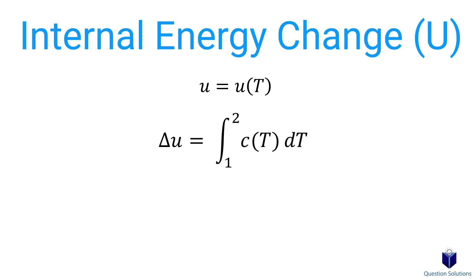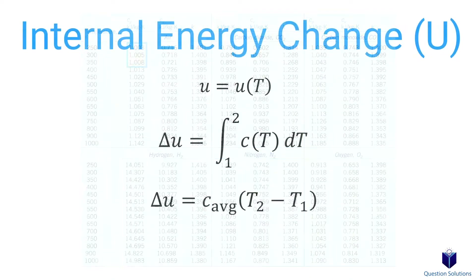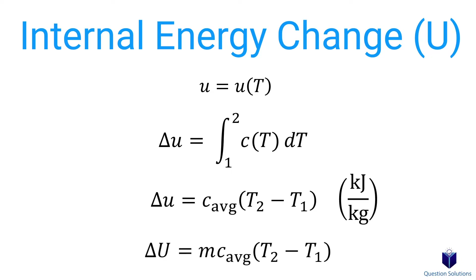Most of the time, you can use the simplified version as long as the specific heat for the range of temperatures is small. For example, looking at this table, notice how from 250 Kelvin to 350 Kelvin the difference is extremely small. In that case, for most problems, integration isn't necessary. The units will be kilojoules per kilogram. This is written per unit mass, but you can multiply everything by mass to get the equation most commonly used, with units of kilojoules.